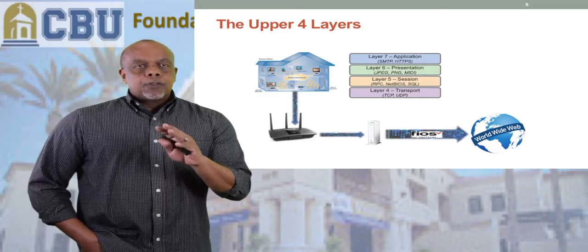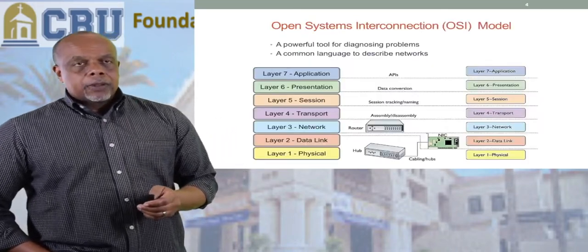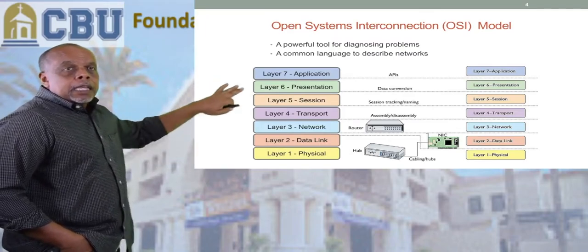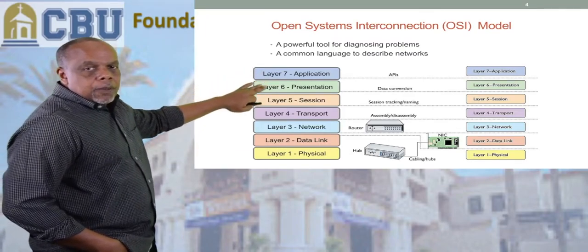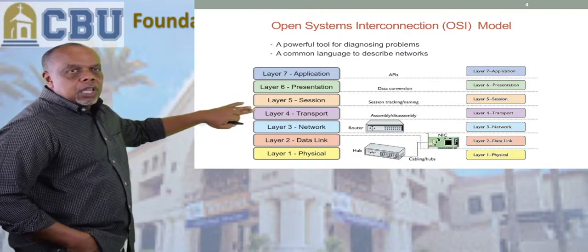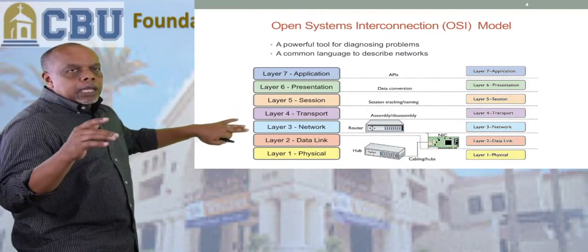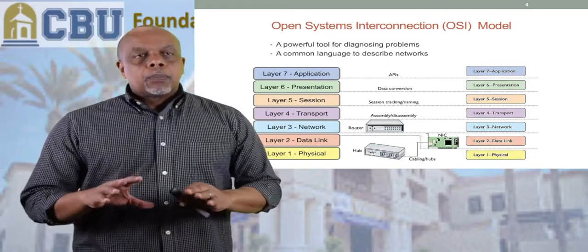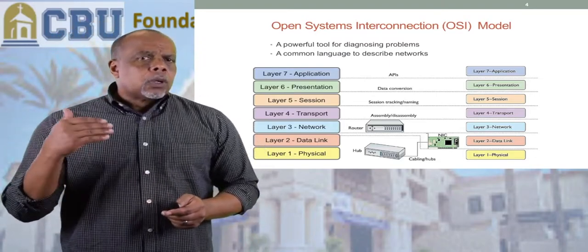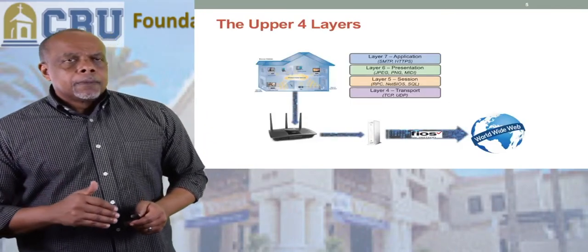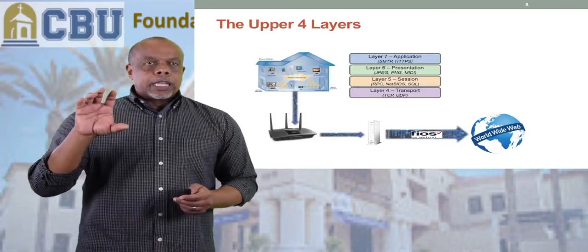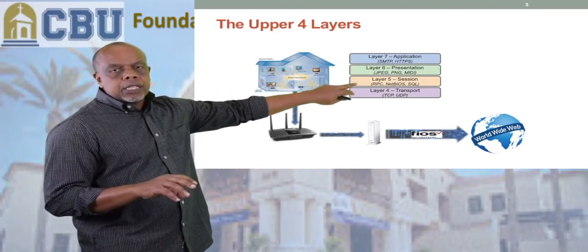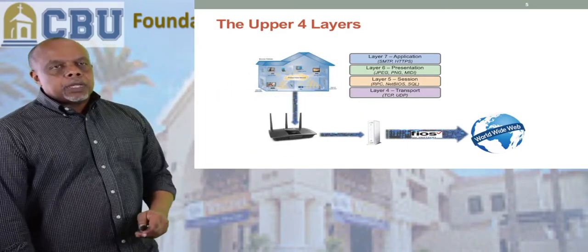We're going to go a little deeper into each of those layers, because this is a good model to help you understand networking from the top down or bottom up. We'll start with the upper four layers. The seven layers of the OSI model are: application, presentation, session, transport, network, data link, and physical. I'm going to start with the upper four — application, presentation, session, and transport.